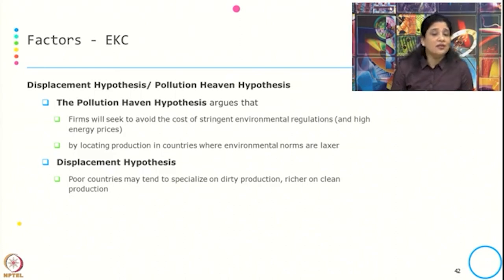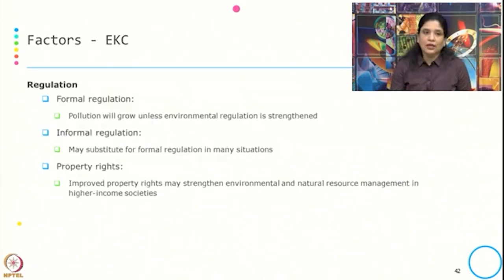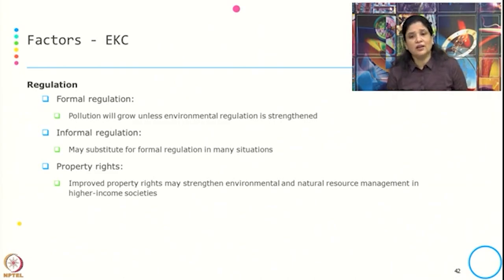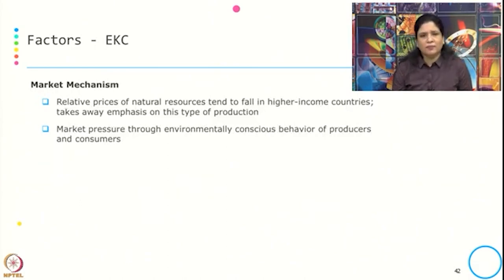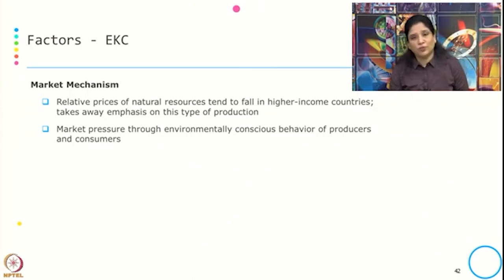Why do developing countries continue even if they know it is dirty technology creating more impact? Because for poorer countries, the focus is more on creating employment opportunities and income. There is also a role of regulation — formal regulation, informal regulation, and property rights. Common resources lead to more environmental degradation, and property rights may strengthen natural resource management in high-income societies. Market mechanisms, mostly through the price of natural resources and the environmentally conscious behavior of producers and consumers through market pressure, also have an influencing factor on the shape of the EKC.